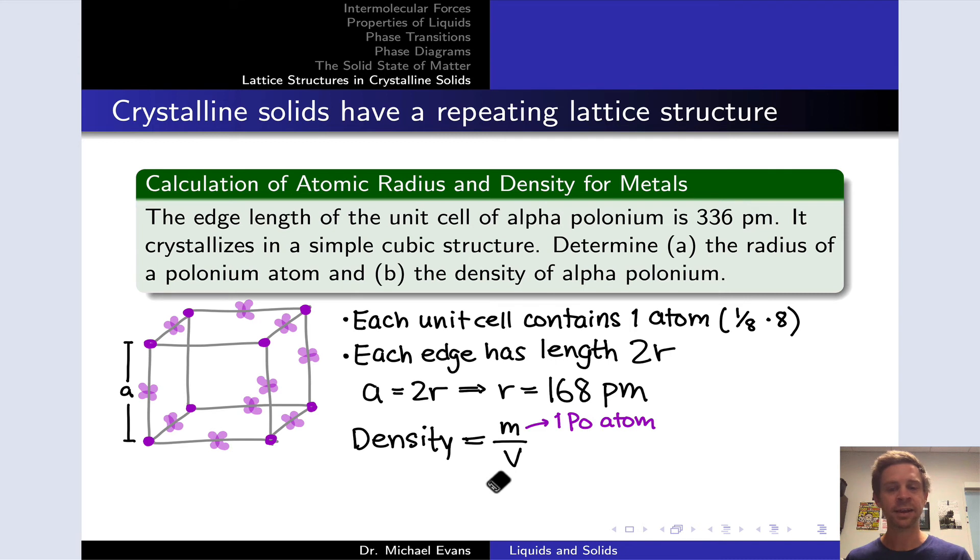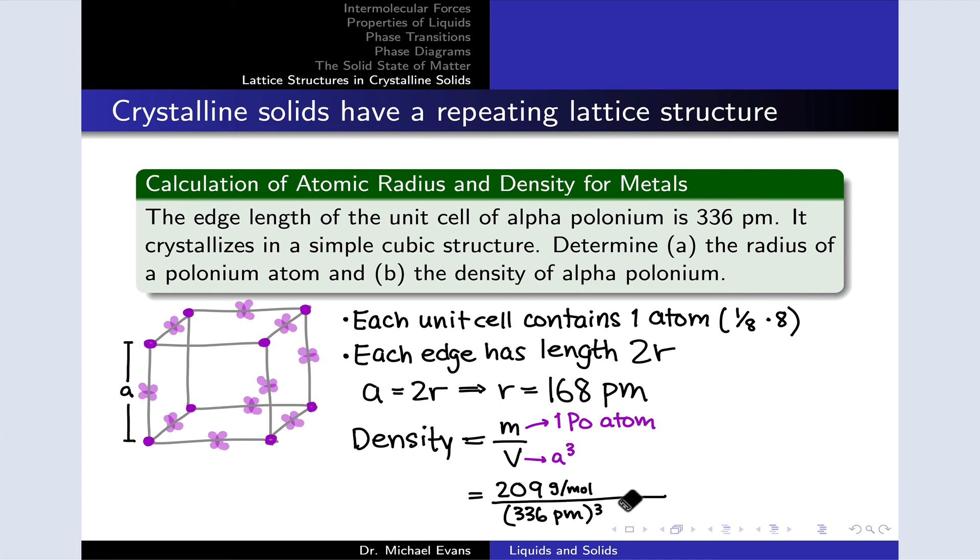The mass inside that unit cell is simply the mass of a single polonium atom. This one polonium atom relates to the fact that we concluded there's one atom inside this cube total. So one polonium atom, the mass of that goes into this mass calculation. What's the volume in which that one polonium atom is existing? Well, it is the edge length cubed. It is a cubed or 2r quantity cubed. So let's take what we know and start plugging things in.